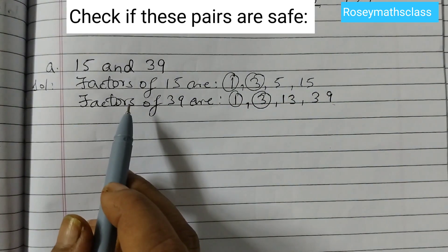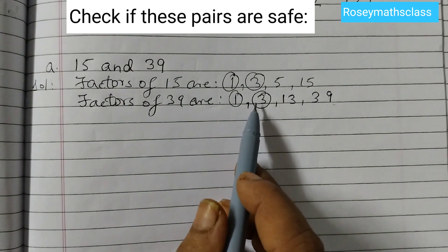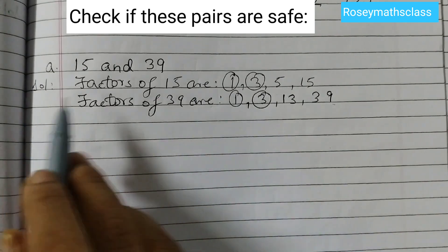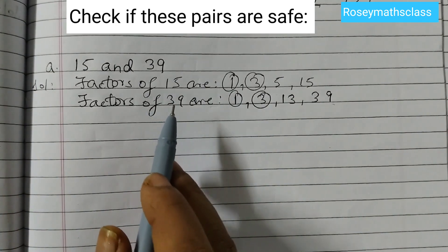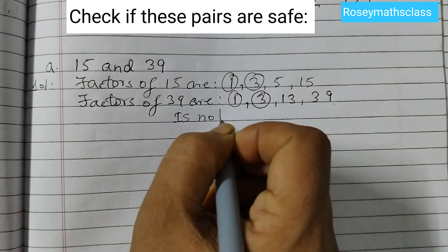For these two numbers to be co-prime, the only common factor must be 1. But here, we also have 3 as a common factor. That means these two numbers are not co-prime and this pair is not safe.